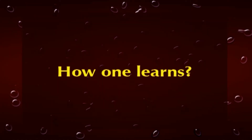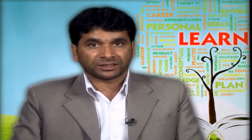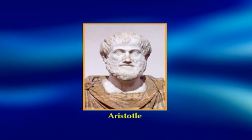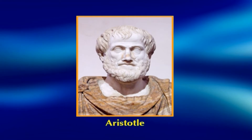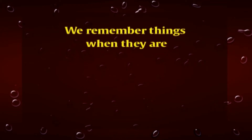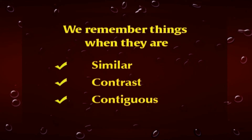But how does man learn? What goes on in the process of learning is one of the most complex tasks to answer owing to its very complex nature. Lots of controversies exist with regard to the process of learning. One of the earliest explanations came from Aristotle, who declared that we remember things when they are similar, when they contrast, and when they are contiguous.